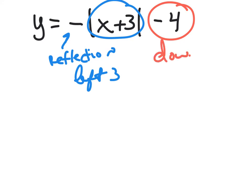So our graph started out at 0, 0. We're shifting it to the left 3, so now our vertex is going to be at negative 3, negative 4.